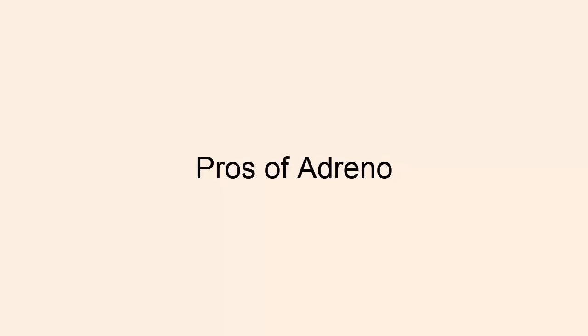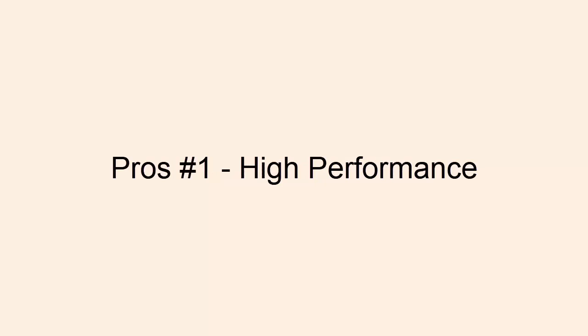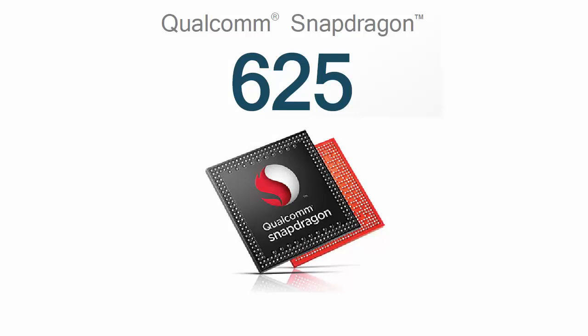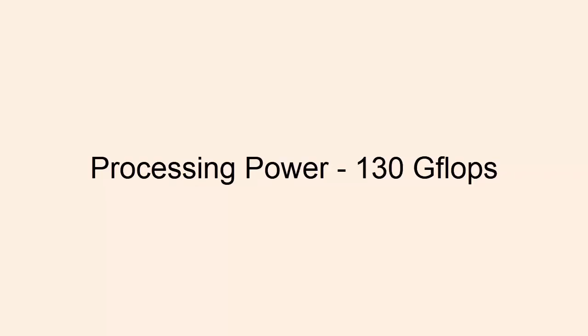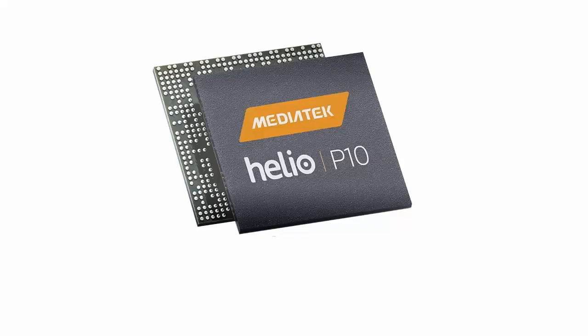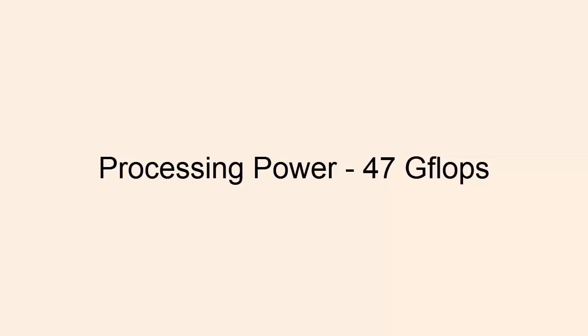Pros of Adreno. Number one: High Performance. Adreno performance is higher than Mali. In the Snapdragon 625, the processing power of the Adreno 506 is about 130 GFLOPs, while its rival the MTK Helio P10 with Mali T860 MP2 has a processing power of only 47 GFLOPs.